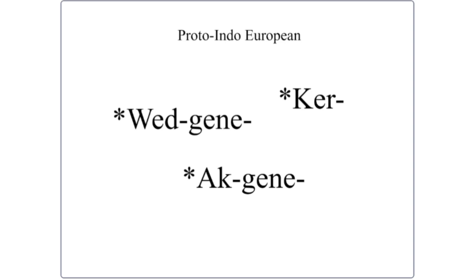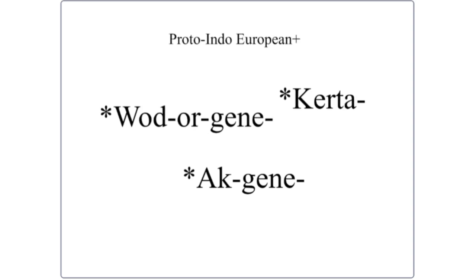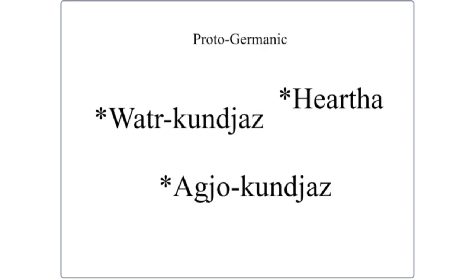From Proto-Indo-European we can start the evolution: Proto-Indo-European → Proto-Germanic → English. In Proto-Indo-European there are suffixed versions of words and words evolved from others within the same language. The PIE forms are *wodorgeni*, *kerta*, and *akgeni*. Moving into Proto-Germanic, these become *watrkundiaz*, *hertha*, and *agyokundiaz* — which is pretty hard to pronounce.